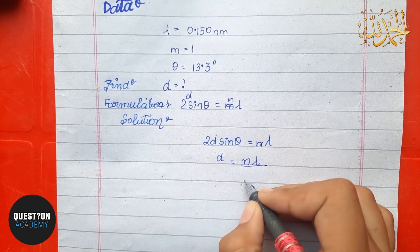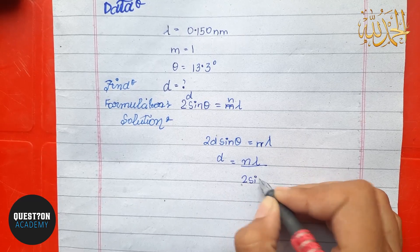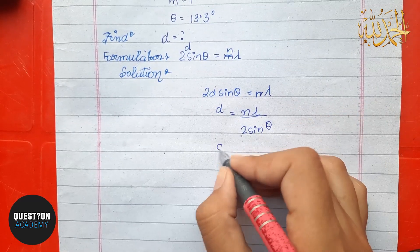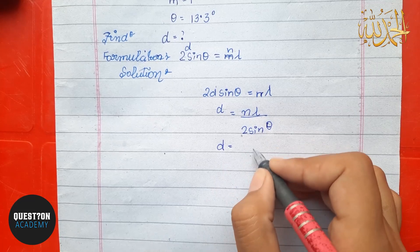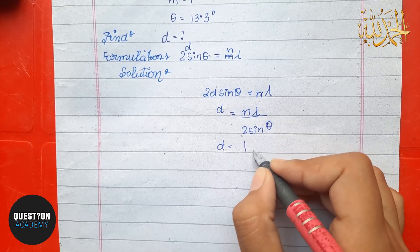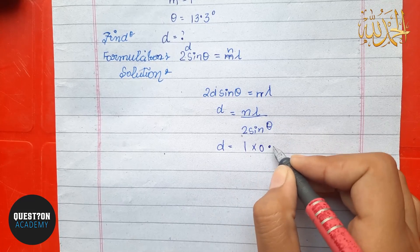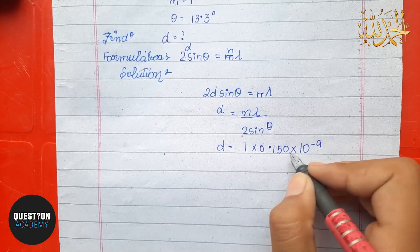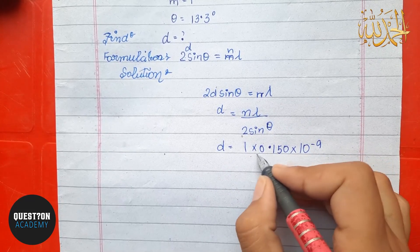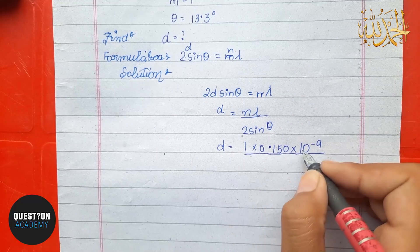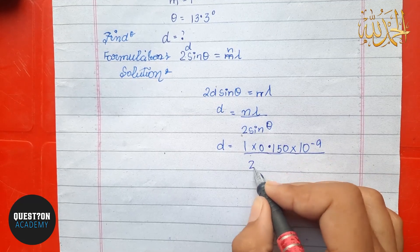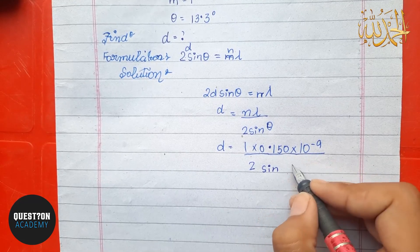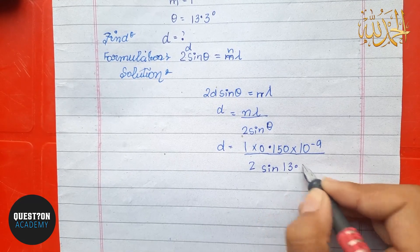Now we rearrange for d: d is equal to n lambda divided by 2 sin theta. Substituting values: n is 1, lambda is 0.150 into 10 to the power minus 9, divided by 2 times sin of 13.3 degrees.